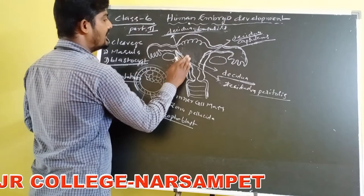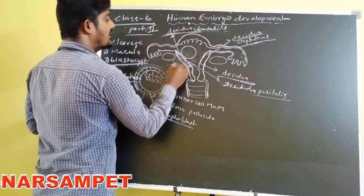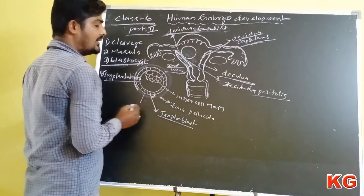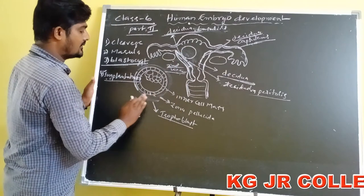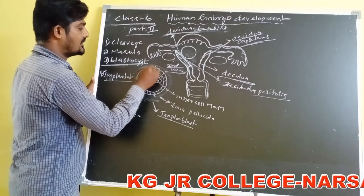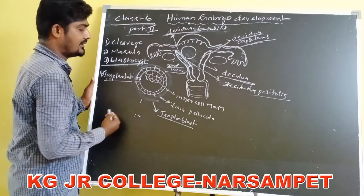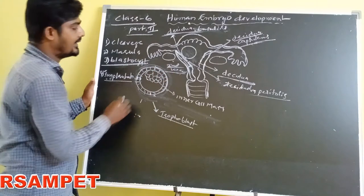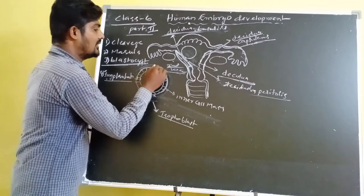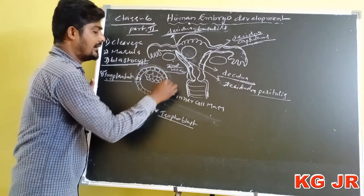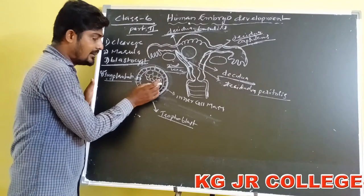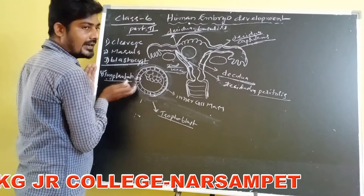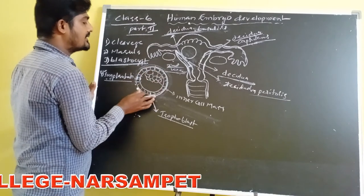Implantation is completed at the end of the second week. After implantation, the embryo looks like a disc-like structure. The rubber cells (Rauber's cells) gradually disappear, so the embryo is now exposed clearly.